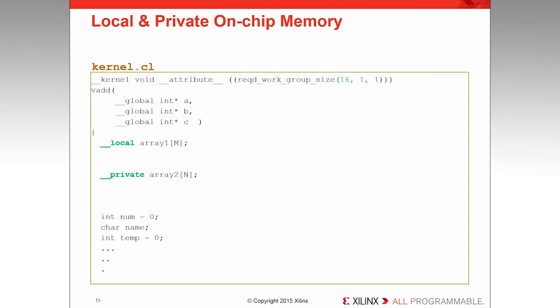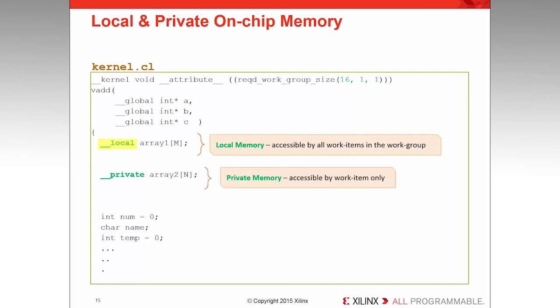Let's see how local and private memories are defined in kernel code. Local memories such as array1 are defined by adding the local qualifier to the variable declaration. During kernel compilation, STXL generates one physical copy of array1 using memory elements inside the FPGA fabric, accessible by all work items in the compute unit. Private memories such as array2 are defined by adding the private qualifier to the variable declaration. During kernel compilation, STXL generates one physical instance of array2 per work item in the work group. In this example, the required work group size attribute has been set to 16, so STXL will generate 16 unique physical memories to store the contents of array2, one for each work item.